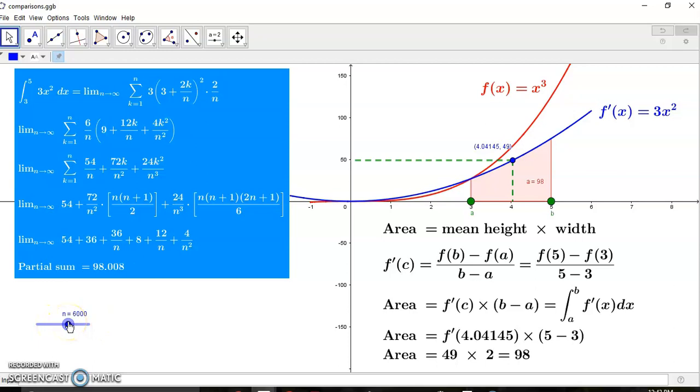Okay, and supposedly the limit is what happens as n becomes very close to infinity. Whatever the fuck, excuse my language, infinity is, because it's a junk concept.